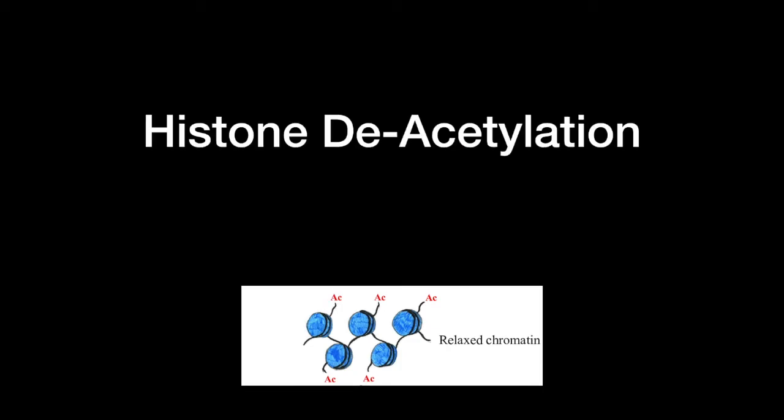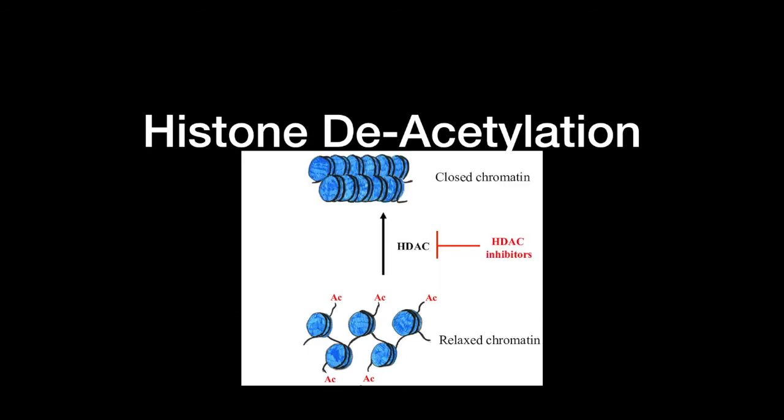Histone deacetylation is the exact reverse of acetylation. Histone deacetylation removes acetyl groups, tightening the DNA coils and decreasing transcription.